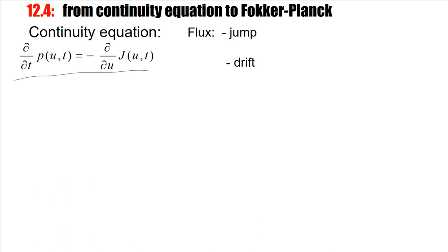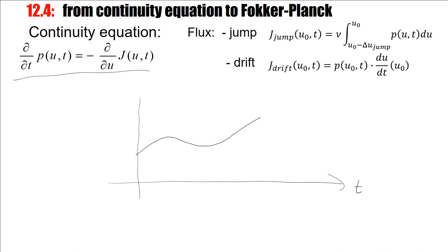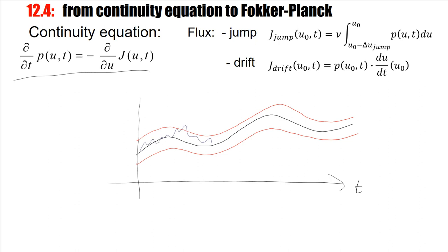To summarize the derivation: we started with the continuity equation, put in the drift flux and the jump flux, made a Taylor expansion to second order, and arrived at the Fokker-Planck equation. This equation describes membrane potential trajectories: in the absence of a threshold, we can decompose the motion into a deterministic component and fluctuating trajectories in some neighborhood around that deterministic reference trajectory.